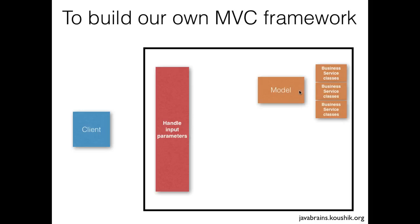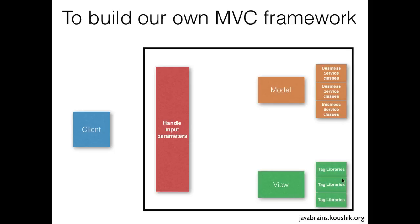Once you have a class calling the right business service and getting raw data back, you'd write JSPs for the view. You can't write common JSPs since they depend on the application, but you can isolate tag libraries — standard controls and libraries you'd want to use in JSPs across different web applications. Since you're developing a hundred MVC web applications, you wouldn't want a lot of duplicate HTML code. So tag libraries would be the next module in the MVC framework.